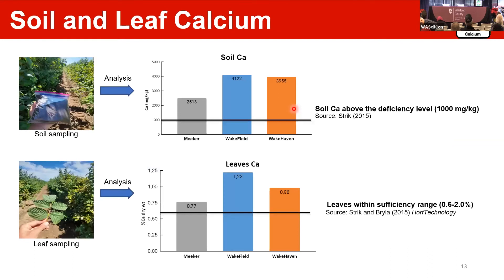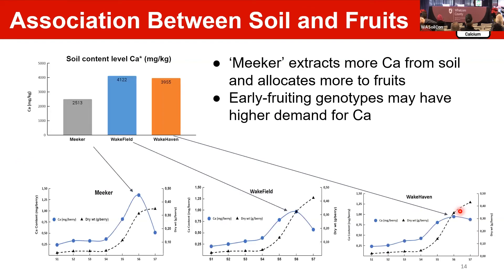About soil and leaf calcium: soil calcium is above the deficiency level of 1000 mg per kg. Most of the time, deficiency is not due to low soil calcium — it's because the fruit develops so fast that the plant doesn't have enough time to supply demand. For leaf sampling, calcium is within the sufficiency range of 0.6% to 2%. Meeker extracts more calcium from the soil and allocates more to the fruit, and every genotype may have a high demand for calcium when comparing Meeker, Wakefield, and Wakehaven.